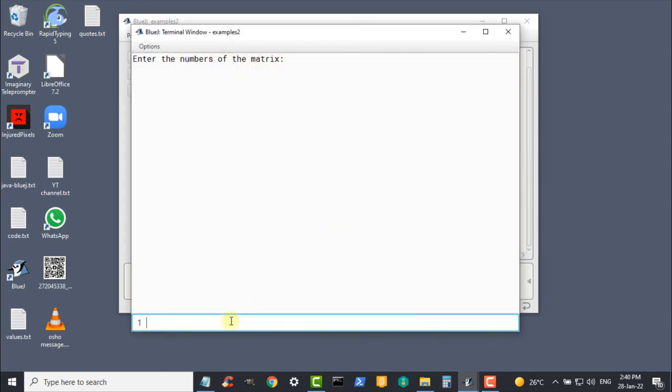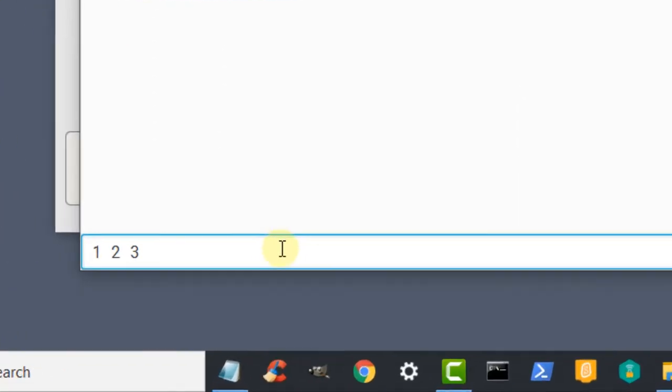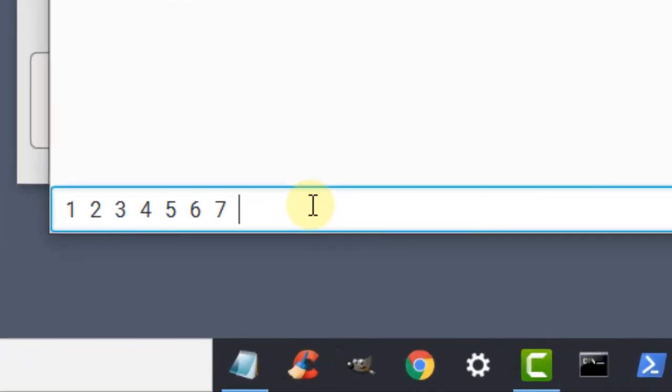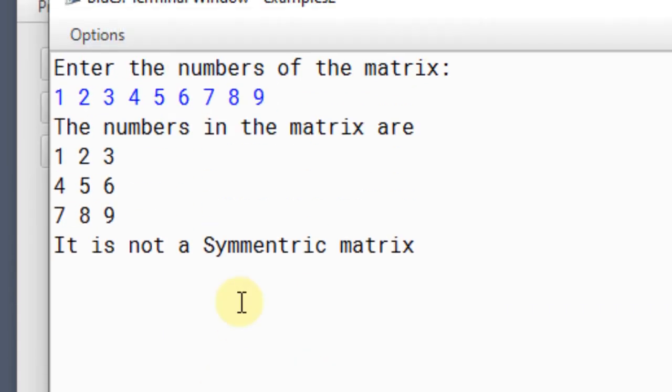This time I will enter non-symmetric values. So as you can see, it is immediately recognizing it is not a symmetric matrix. So you can test this program with different set of values and see how it works.